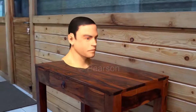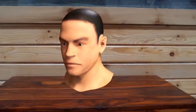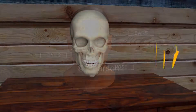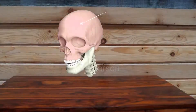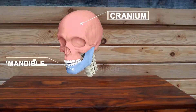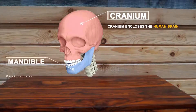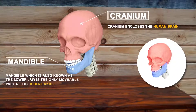The skull plays a major role in holding and binding together key parts of the human face, such as eyes, nose and ears. The human skull is made up of two parts: 1. Cranium and 2. Mandible. Cranium encloses the human brain. Mandible, which is also known as the lower jaw, is the only movable part of the human skull.